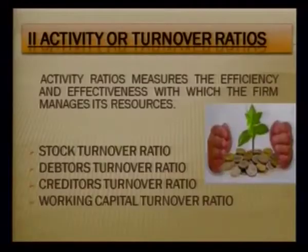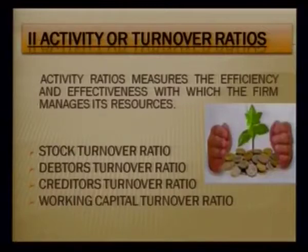As the name suggests, these are ratios based on the activity of the business or on the turnover, which basically means the sales. These ratios are calculated with the help of the sales and cost of goods sold. We are going to include four different types: stock turnover ratio, debtors turnover ratio, creditors turnover ratio, and working capital turnover ratio.